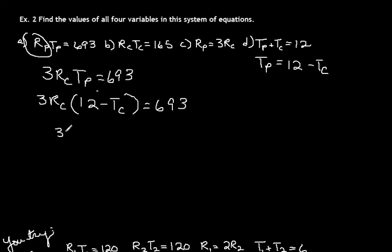Distribute, so we get 36RC minus 3RCTC equals 693. So we use this equation, we use this equation, and we use this equation. The only one left is this one.